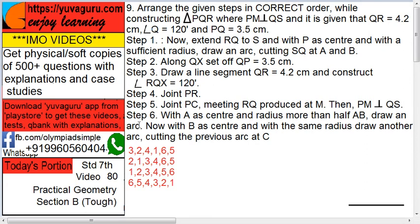Then 2: along with QX set QP equals to 3.5. Yes, now remaining steps are in sequence. You just check them one by one and you will get the answer, no need of wasting it.